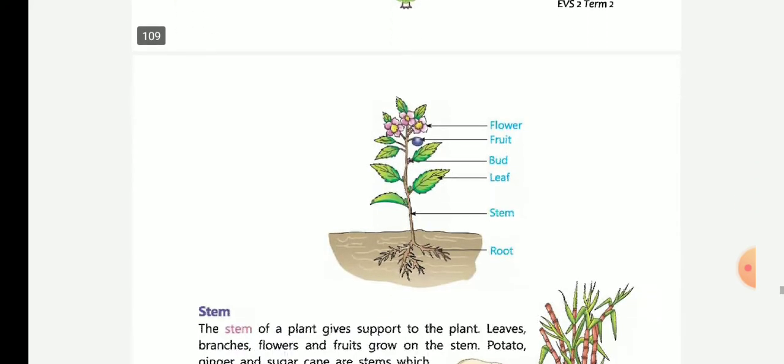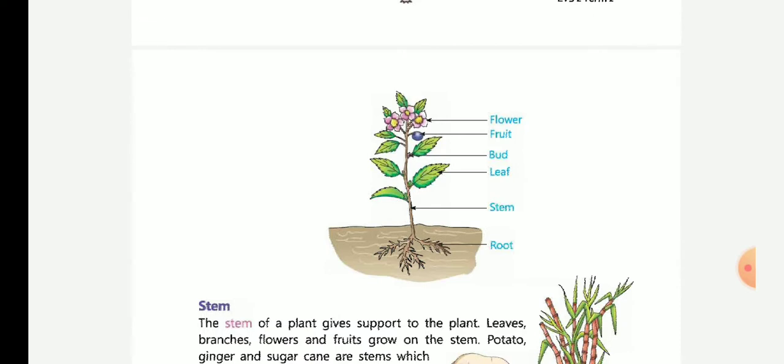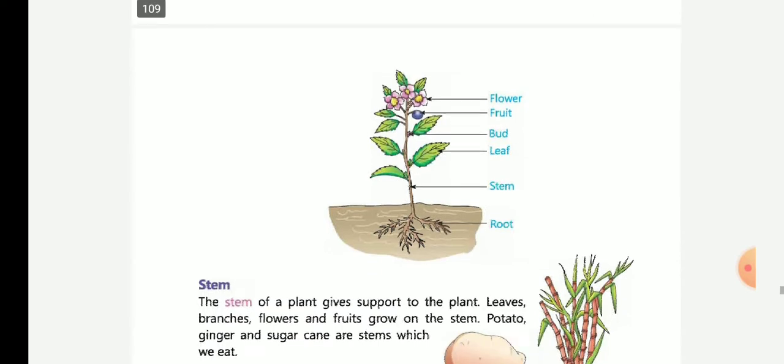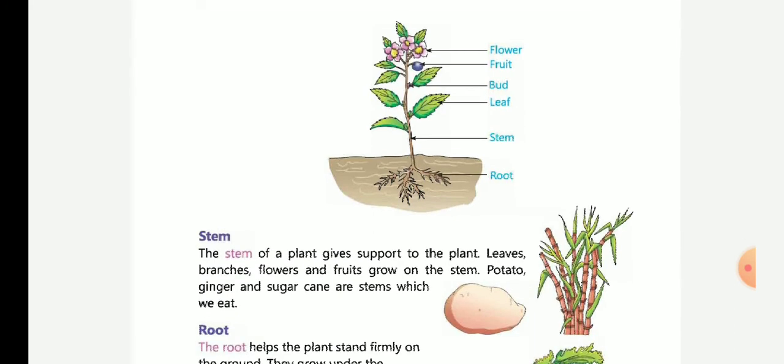Here we have a plant structure with all the parts: flower, fruit, bud, leaf, stem, root. These are all plant parts.